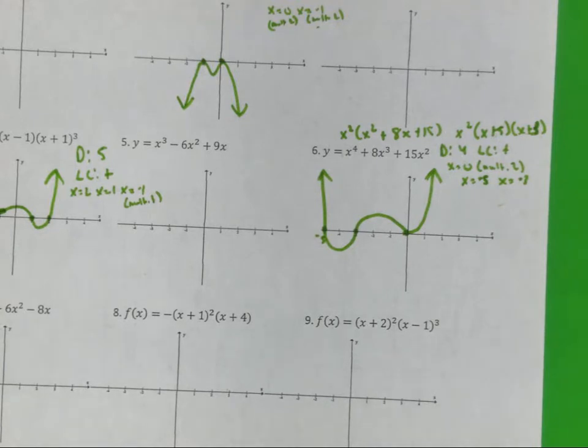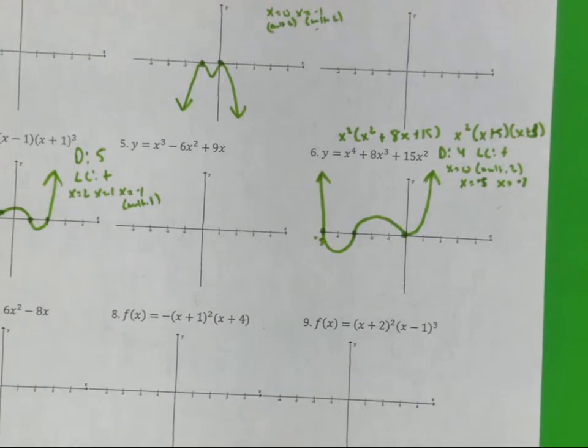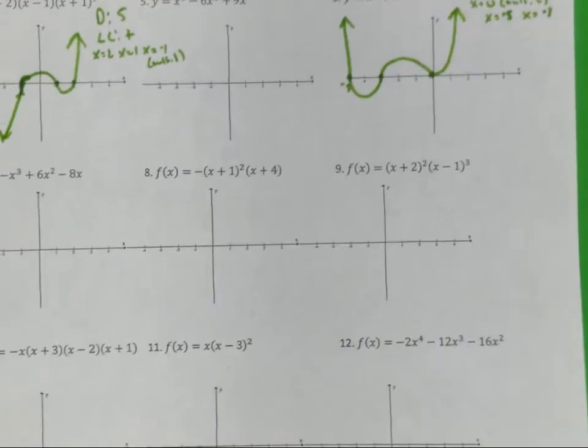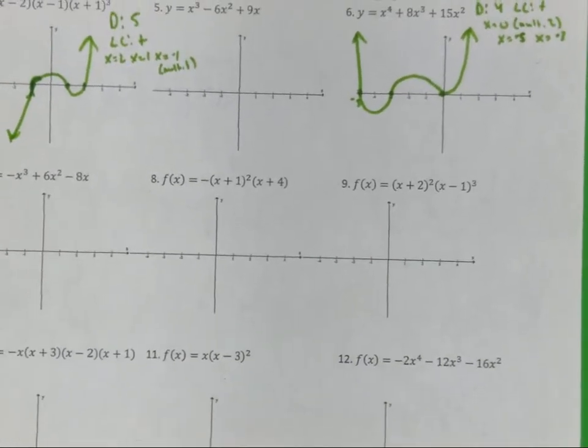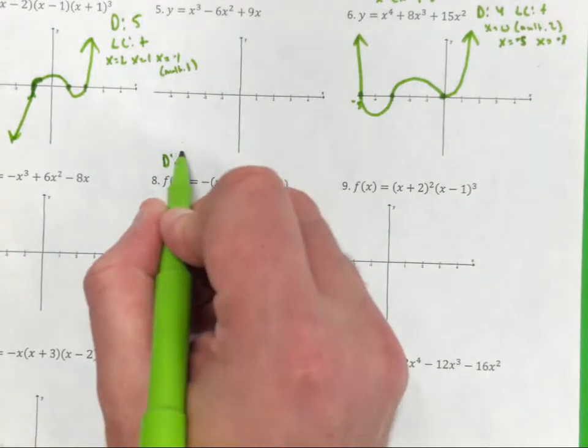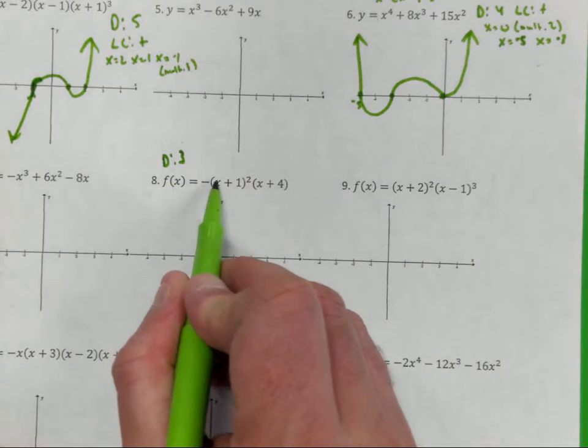Are there any questions on 2, 4, 6? We're going to do 8, 10, and 12 together. Number 8. What degree do I have here? 3. Very good. And he got that by going 1, 2, 3.